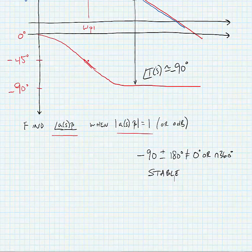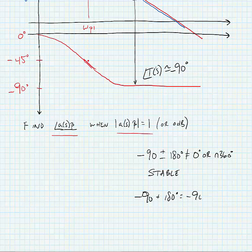This difference, minus 90 plus 180 degrees is equal to—sorry—is equal to plus 90 degrees, is our phase margin.